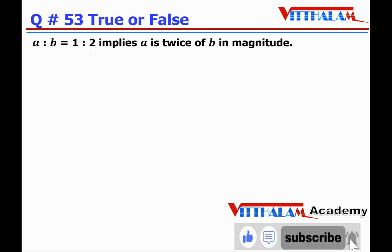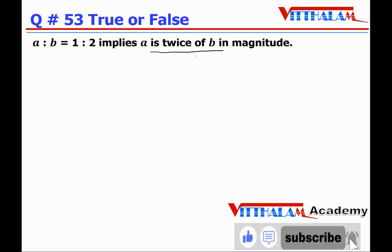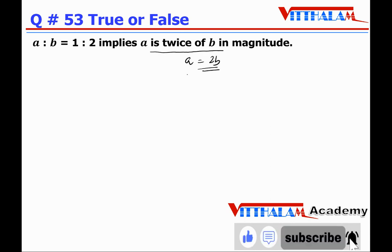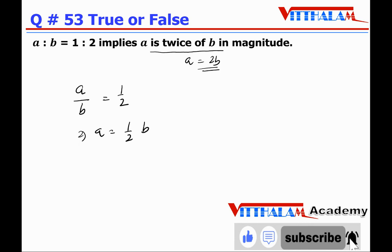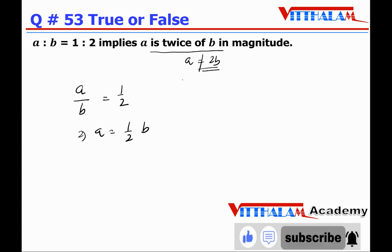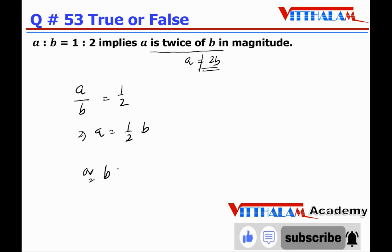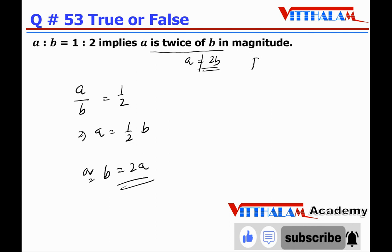Question 53: a:b = 1:2 implies a is twice of b — False. a/b = 1/2, therefore a = b/2, meaning a equals half of b, or equivalently b = 2a. So a is not twice b; rather b is twice a. The given statement is False.